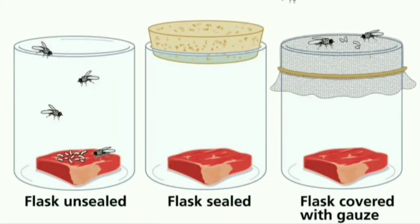The diagram that you see on the screen shows an experiment done by Redi. He used three jars: the first jar was unsealed, the second jar was sealed with a cork, and the third jar had its mouth tied with a net.